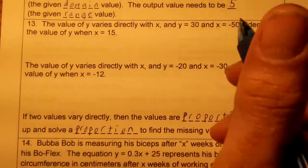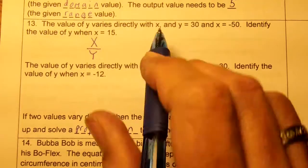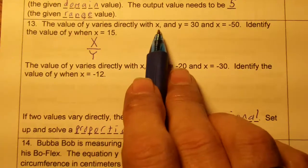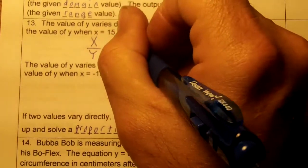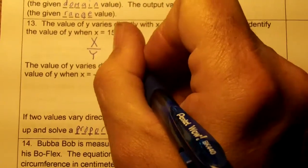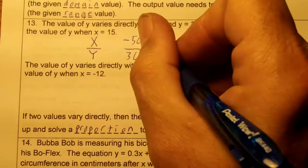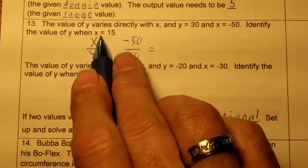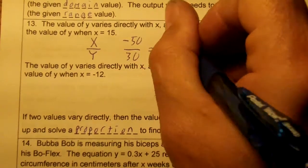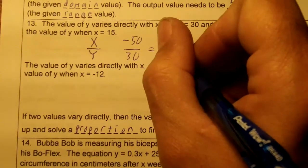So we're going to set up and solve a proportion, and the variables are going to be x and y. Let's put our x is negative 50 and our y is 30. We can put them in either way. And we know that x is going to be 15. So we have x is negative 50, y is 30, and we know that our x is 15. And we want to find y.